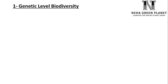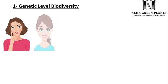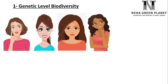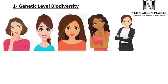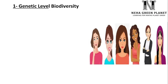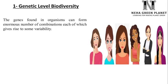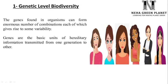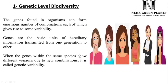Genetic level biodiversity: within a particular species we find a lot of variations. Take our own species, humans or Homo sapiens — we are all different in intellectual behavior, appearance, skin color, and hair color. These variations are possible only because of different genetic composition, meaning our DNA and RNA vary from each other. So genetic level biodiversity means the genes found in organisms show different kinds of combinations, and these combinations result in variability. Genes are basically DNA and RNA — the basic hereditary information transmitted from one generation to another. When genes within the same species show different versions due to new combinations, it is called genetic variability.